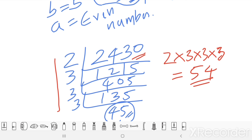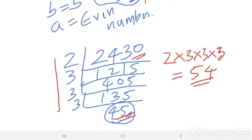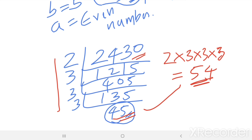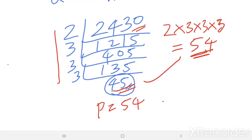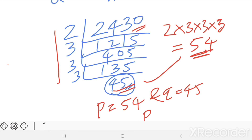Reversing the digits of 45, we get 54. Therefore, these are the two numbers we are looking for: P equals 54 and Q equals 45. The difference between P and Q equals P minus Q equals 54 minus 45, which gives 9.